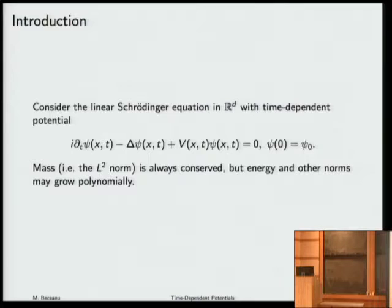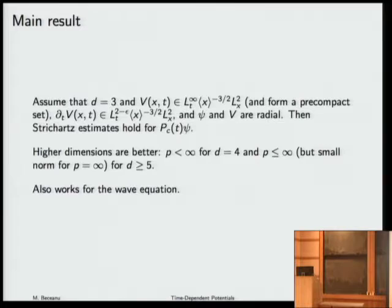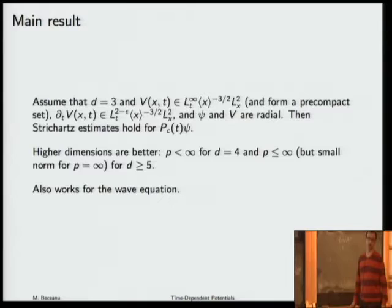But my results are more general than that. First, in dimension three, let's assume that the potential is L² with some decay that actually makes it L¹. And the derivative of the potential is a little bit better than L² in time with the same decay in space. For now, let's also assume that everything is radial. Then Strichartz estimates hold for the dispersive part of the solution.